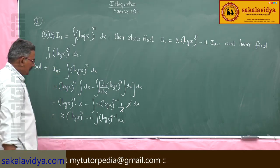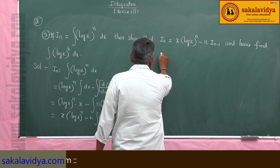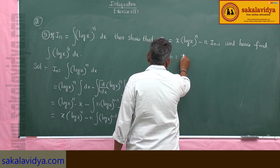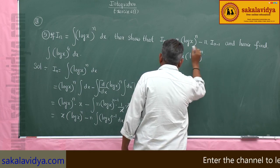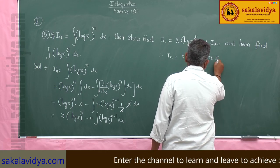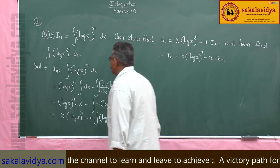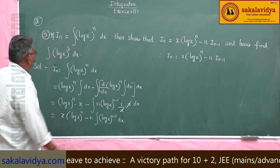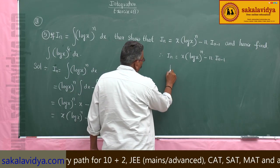This integral is I(n−1). Therefore, I(n) equals x log x to the power of n minus n times I(n−1). This is the required reduction formula. Now to deduce the value, put n equal to 4.